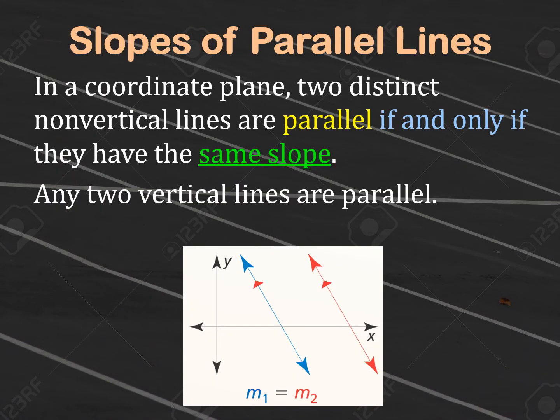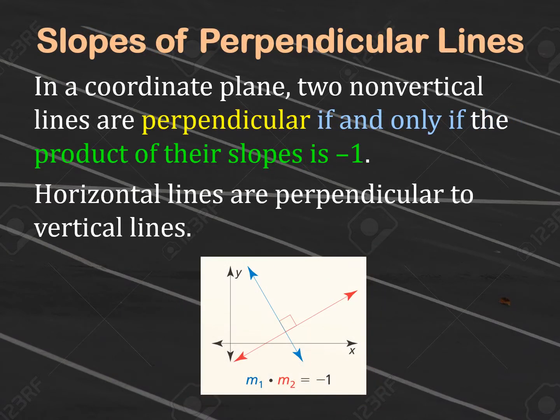As a refresher: the slopes of parallel lines — two lines are parallel if and only if they have the same slope, and any two vertical lines are parallel. As a review, the slopes of perpendicular lines are negative reciprocals of each other. Two non-vertical lines are perpendicular if and only if the product of their slopes is negative 1. So if the slope of the first line is 2/3, the slope of the perpendicular line is negative 3/2 — you flip the fraction and change the sign. Also, horizontal lines are perpendicular to vertical lines.